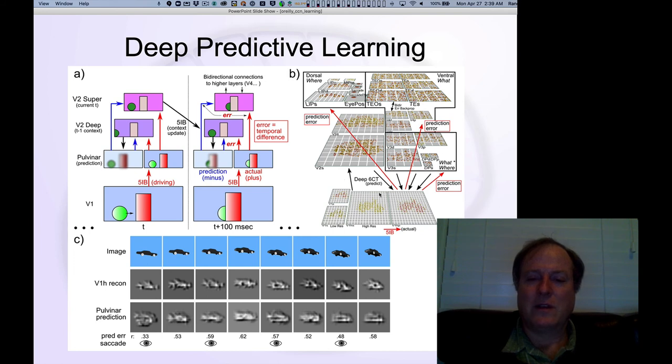And this is a picture of one of these models. We've actually incorporated a lot about the visual system, including the what versus where separation. There's a lot of important details about how this model works, and how these different pathways interact. And these were necessary to get the model to learn high-level abstract representations of visual object categories. But they are all based on this fundamental idea that you are alternating between these phases of a minus phase of prediction, followed by a plus phase, where this bottom-up driver input drives this bursting activity onto the pulvinar.